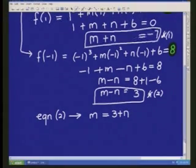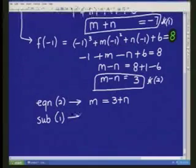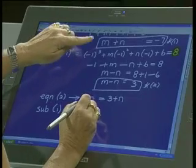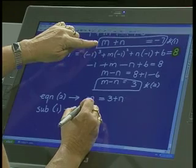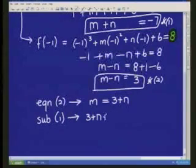m is equal to 3 plus n. Excellent. Okay. Now what are you going to do with that, Makhlazi? I will substitute 3 plus n wherever you see m. Good. So we're going to take that and substitute into our first equation. So tell me what it's going to become. Instead of m, we're going to write 3 plus n plus n equal to negative 7.